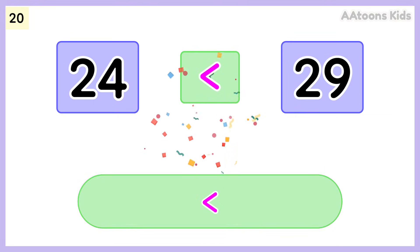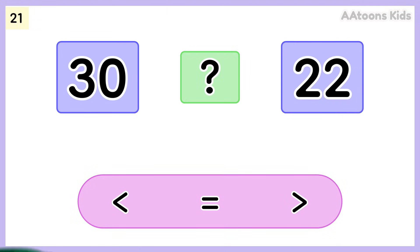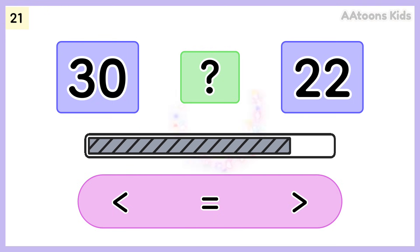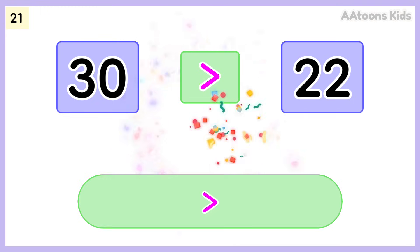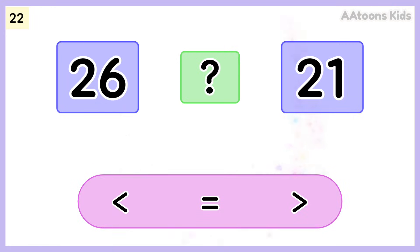Twenty-four is less than twenty-nine. Choose the correct symbol. Thirty is greater than twenty-two. Pick the correct symbol.